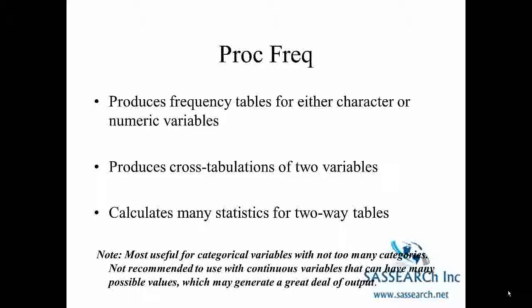PROC Freq produces frequency tables for either character or numeric variables. PROC Freq is also used to produce cross-tabulations of two variables, and it is very useful for calculating many statistics for two-way tables, such as the chi-square statistic and Fisher's exact statistic. We will be talking in detail about the kinds of statistics we can calculate from PROC Freq later in the class. Note that it is most useful for categorical variables with not too many categories — using PROC Freq with continuous variables that can have many possible values will generate a great deal of output.